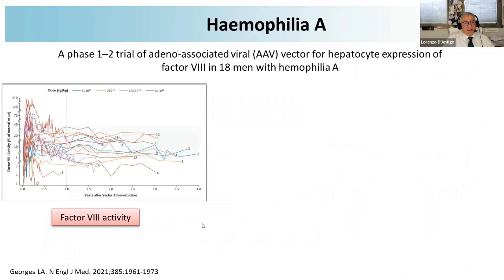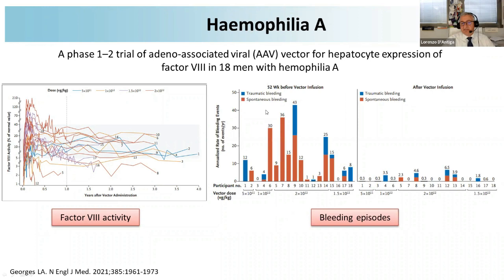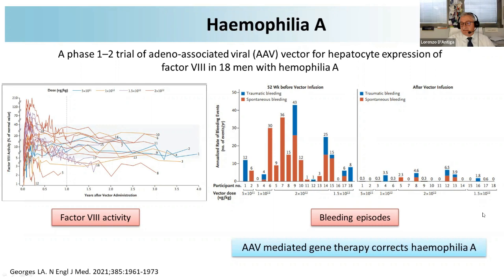Hemophilia A is probably the most famous success, now established as a licensed treatment. This publication shows 18 patients where the enzymatic activity of factor VIII rises nicely and is maintained in the long term. Most importantly, bleeding — both traumatic and spontaneous — disappears after treatment. This is a very rewarding disease because even a small percentage increase in factor VIII activity allows disappearance of bleeding. This is truly a big success in gene therapy, and this treatment is licensed in the EU.